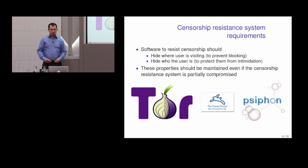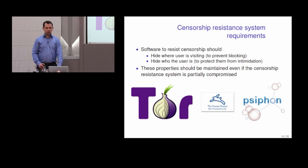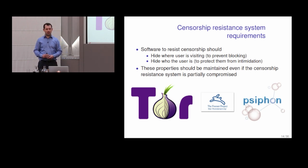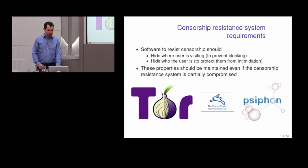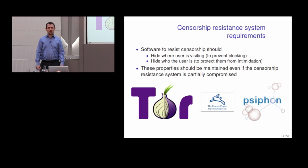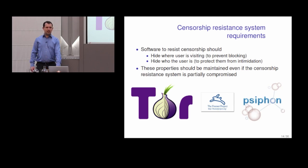This leads to one of the important requirements of a censorship resistance system. The obvious one is that the service should allow you to visit the website you want to. The additional requirement is it should also hide who the user is when they access the website — to avoid retribution that might come if you access it. What's more, these properties should be maintained even if the system is partially compromised — maybe the government will hack into or start running part of the anonymity system.